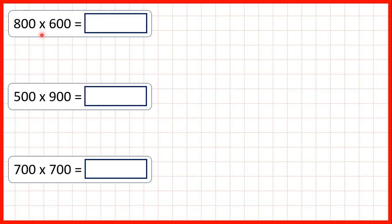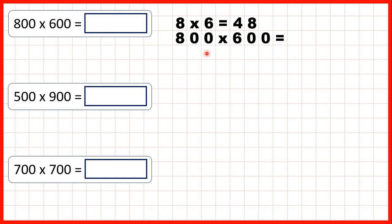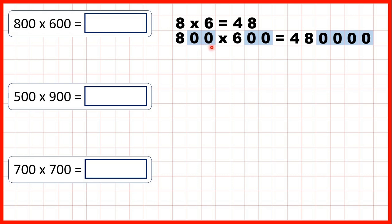Here we need to multiply two multiples of a hundred — two numbers that end in two zeros. First we have 800 times 600, and we can use mental methods to solve this because we know that 8 times 6 is 48, and that means 800 times 600 must be 480,000. After we've written our answer to 8 times 6, we count the end zeros in our question — we have a total of four end zeros, two here and two here — and that means we need four end zeros in our answer: 480,000.